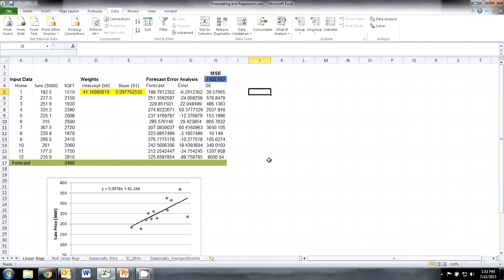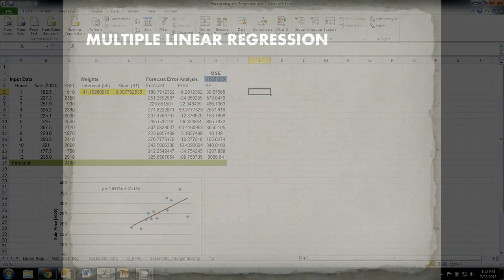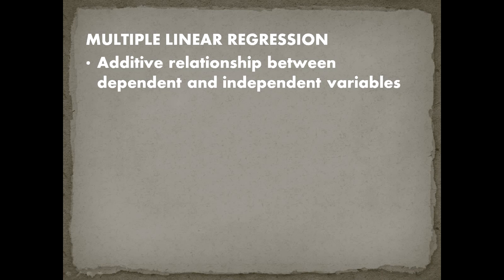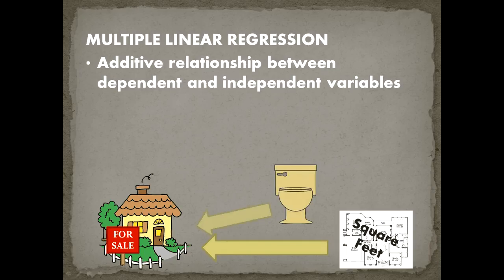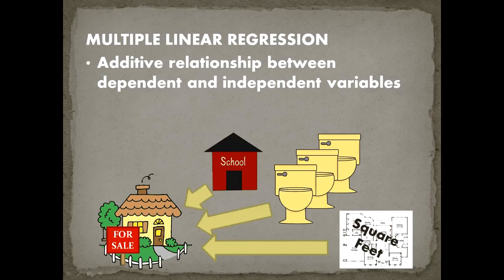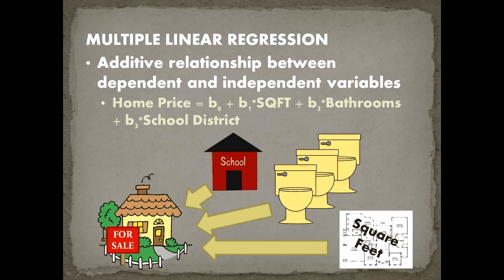That's our simple linear model. Now what if we want to look at other factors beyond just square footage when making a home sale prediction? Multiple linear regression estimates an additive relationship between the dependent variable and multiple independent variables simultaneously. For our home, we'd predict sale price using square footage, number of bathrooms, and school district. The equation becomes: home price = β₀ + β₁(square footage) + β₂(bathrooms) + β₃(school district).